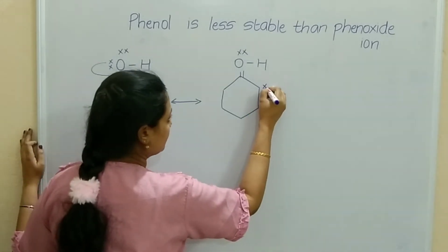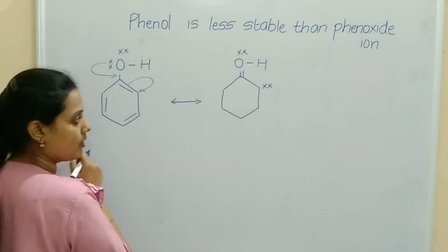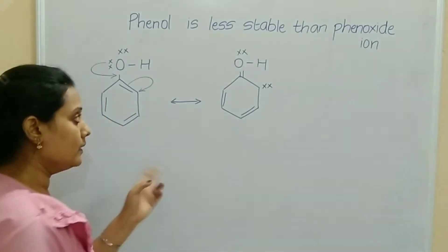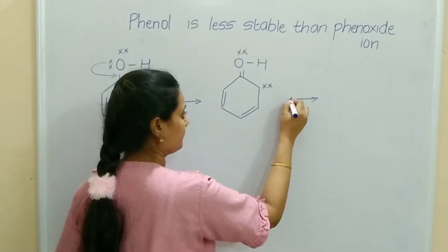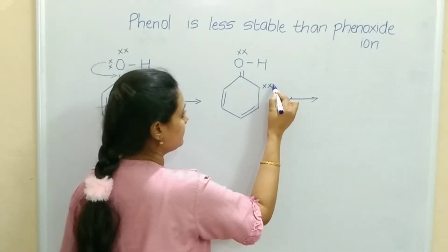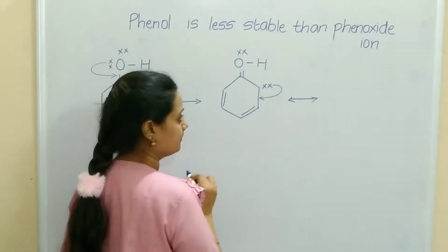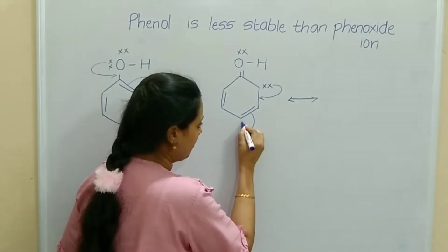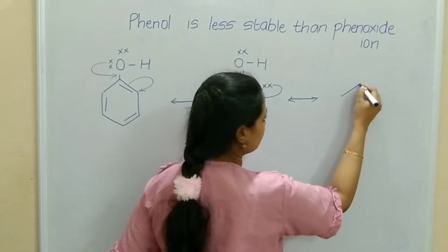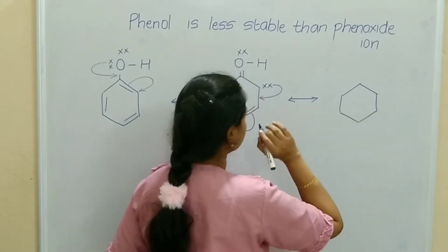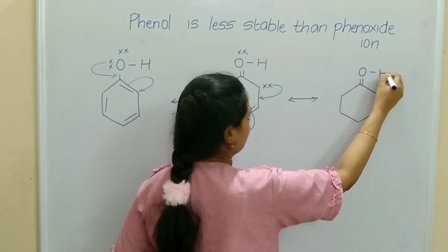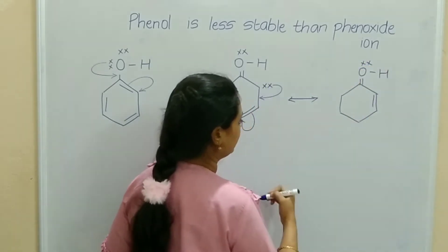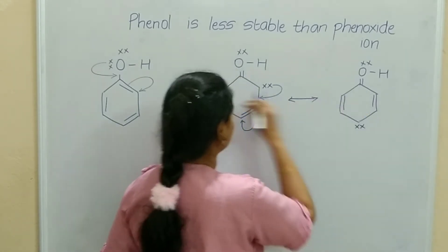In the first resonating structure, a double bond is formed. Oxygen retains one lone pair of electrons, and here one electron pair forms the bond, with the remaining two bonds as they are. For the next resonating structure, this electron will form a bond on the next side, and the double bond will come to the corner as electrons. Draw the structure: ring, double bond, oxygen, hydrogen, lone pair of electron, this electron forming a bond.